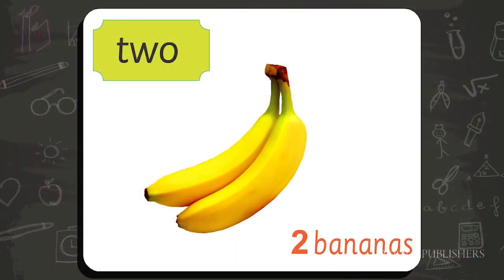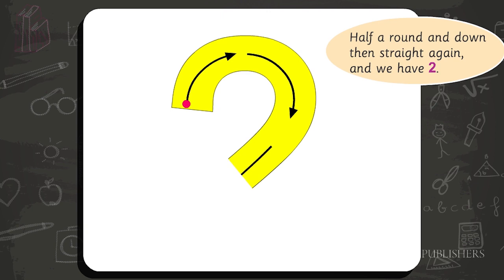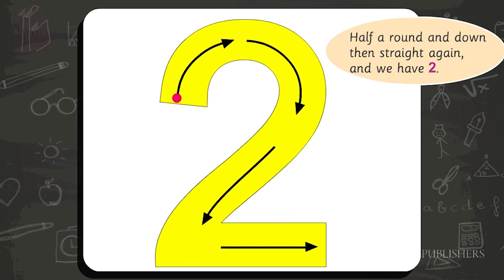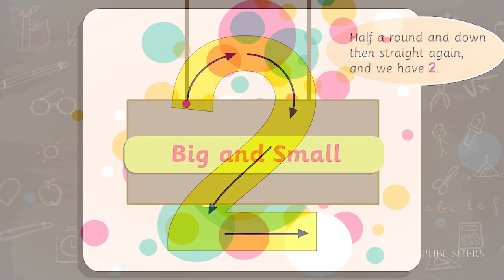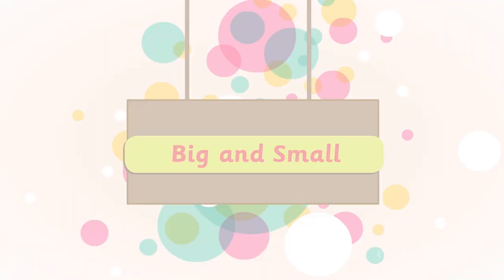Two — half a round and down, then straight again, and we have two. Big and small — see the difference between big and small.